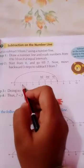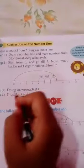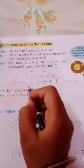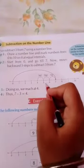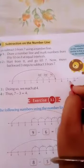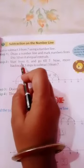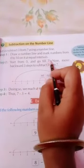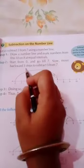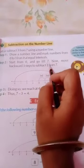Mark numbers from 0 to 10. We will write 0, 1, 2, 3, 4, 5, 6, 7, 8, 9, 10. Step 2: Start from 0 and go till 7. Now move backward 3 steps to subtract 3 from 7.